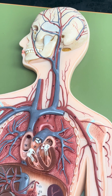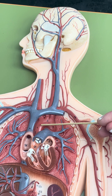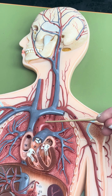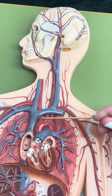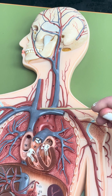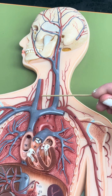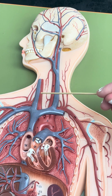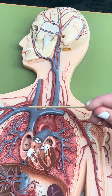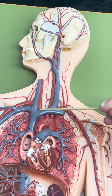In this video, I'm going to highlight the arteries and veins of the head and neck. Starting at the aortic arch, we immediately see the right brachiocephalic trunk. That is going to branch into the right common carotid artery coming up the neck and the right subclavian.